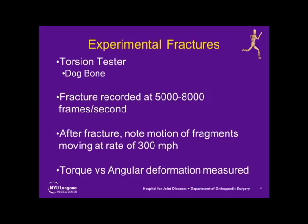We produced experimental fractures by using a torsion tester and dog bone from the dog lab. The fracture was recorded at 5,000 to 8,000 frames. After fracture, note the motion of the fragments moving at a rate of 300 miles per hour. The fracture machine also recorded the torque versus angular deformation, and is visualized.